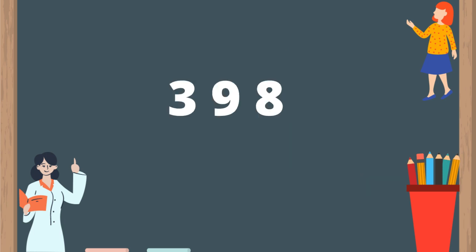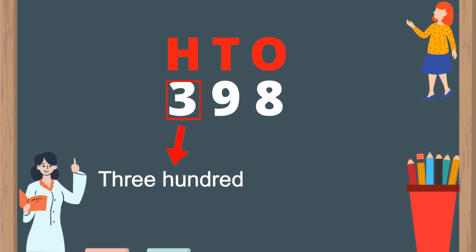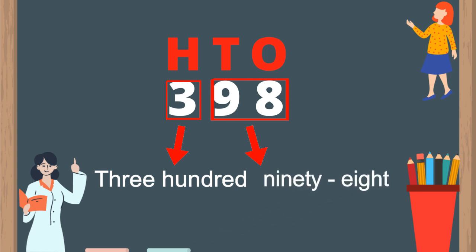Let's try one more number: 3, 9, 8. Here, 8 is in the ones place, 9 is in the tens place, and 3 is in the hundreds place. Divide the numbers into 2 parts. The first part is 3 in the hundreds place, so 3 is read as 300. The second part is 9 in the tens place and 8 in the ones place, so 9 and 8 together is read as 98. So this number is 398.